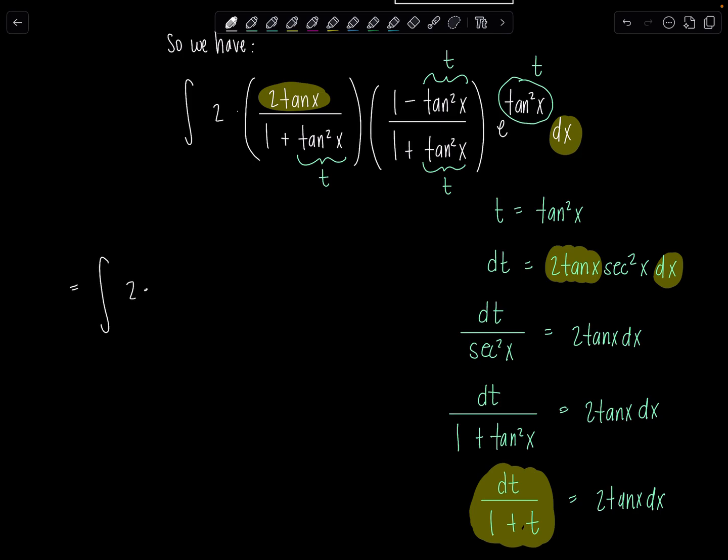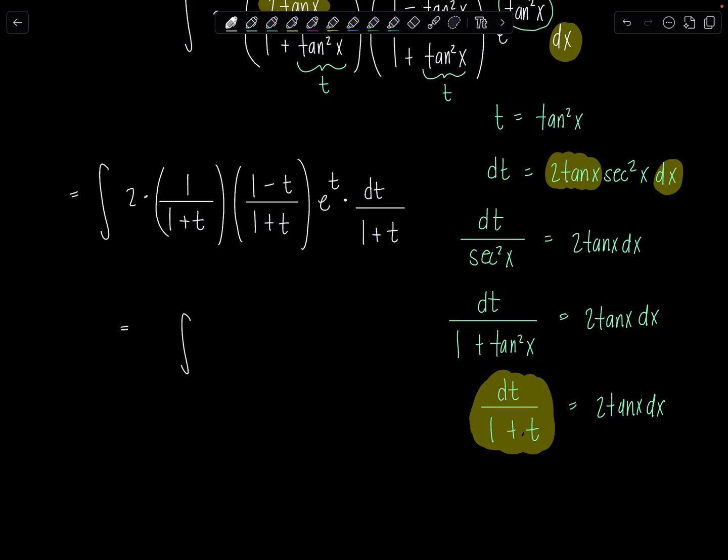Almost perfect. Here's 2 tan x dx. 2 tan x dx. What do I not want? That's secant squared x. So I'm going to divide by it. So dt over secant squared x is 2 tan x dx. Can I somehow rewrite this in terms of t? Yes, because secant squared x is 1 plus tan squared x. Oh, okay. And that equals 2 tan x dx. And remember, tan squared x is t. So dt over 1 plus t is 2 tan x dx. So basically now, this 2 tan x dx is going to get replaced with dt over 1 plus t. And then now we can rewrite this whole integral in terms of t.